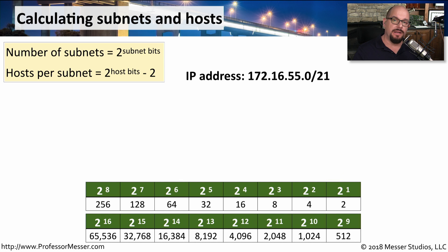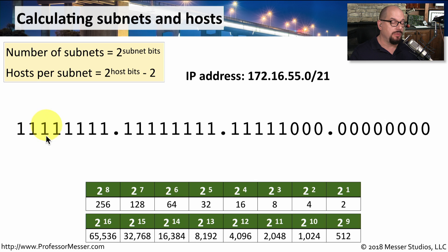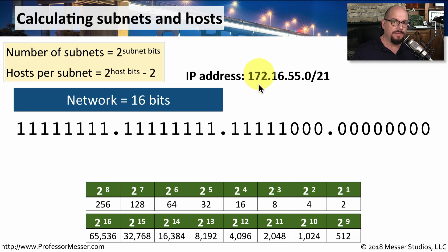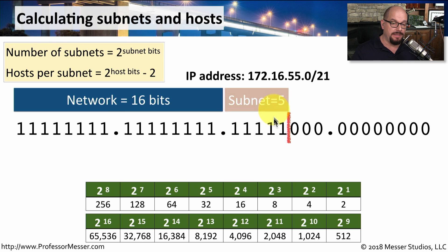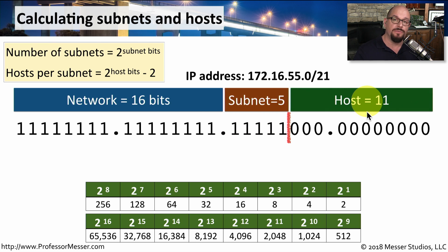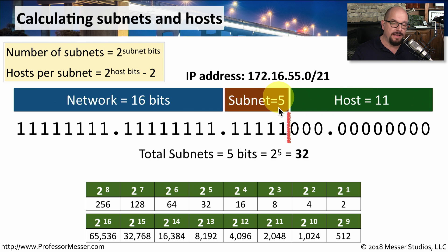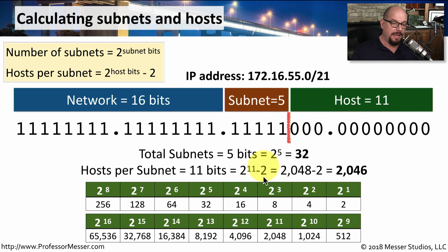Let's calculate one more subnet using 172.16.55.0/21. The /21 means we have 21 subnet bits set. Since 172 at the beginning means this is traditionally a class B address, the subnet mask would be 16 bits long. That means we have five bits to use as subnetting bits and 11 bits left over for hosts. For subnets: 2 to the 5th power is 32, so we can create 32 individual networks. For hosts: 2 to the 11th is 2,048, minus 2, leaving us 2,046 devices per subnet.